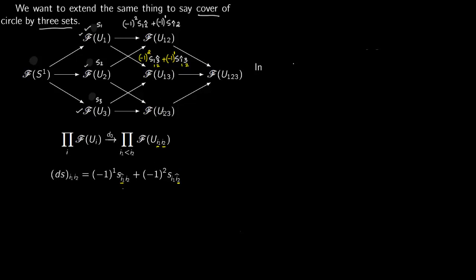Now we apply this formula to F(U23). This is coming from two places — from here and here. For F(U23) with indices 2,3: you write S2-3 — this is coming from S2, so 3 is missing and the second index is missing. So you have minus 1 squared. Now focus on S3: 2 is missing, so you have S2-hat-3. You have 2,3 with 2-hat and 3, so the first index is missing, giving minus 1 to the power of 1.